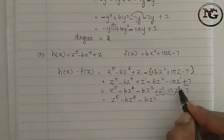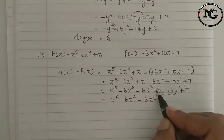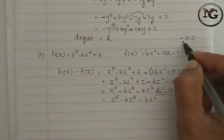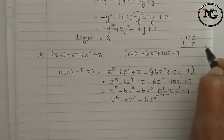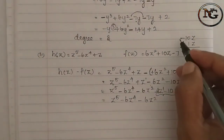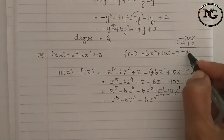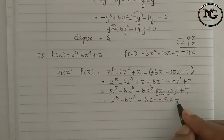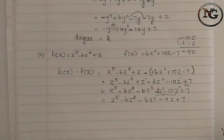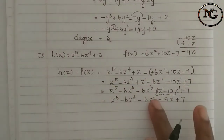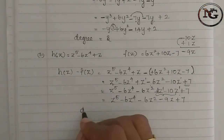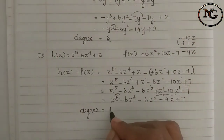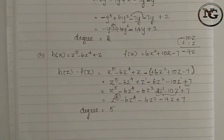In standard form: z power 5, then minus 6z power 4, then minus 6z squared. Now for the z terms: 1z minus 10z — bigger number symbol is minus, different symbols subtract: 10 minus 1 is 9, so minus 9z, then plus 7. This is the resultant polynomial. The degree is the highest power, which is 5.